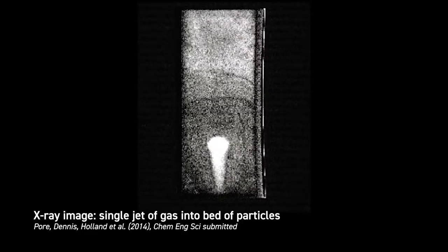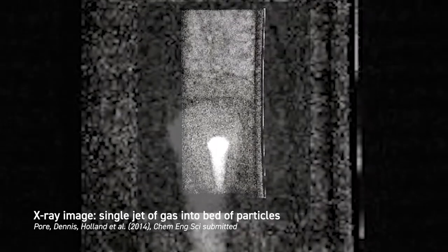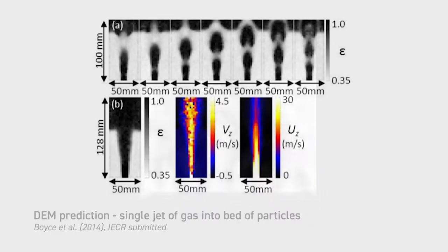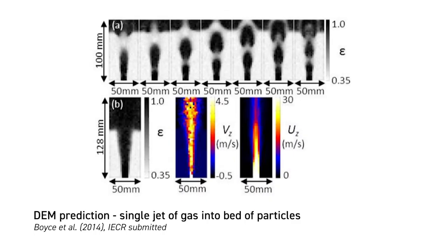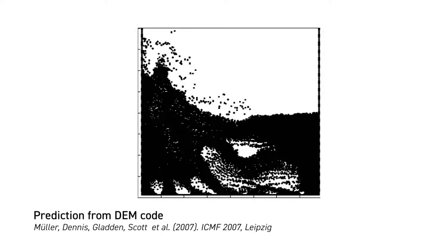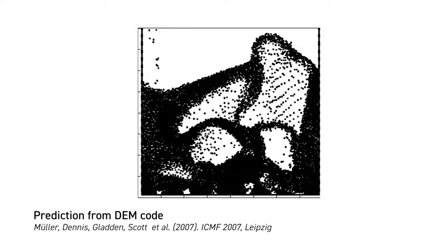The group has used a variety of techniques in order to investigate the flow behaviour, including MRI, electrocapacitance tomography, and other experimental techniques to validate theoretical models. From this we can learn more about the various mechanisms that drive this behaviour.